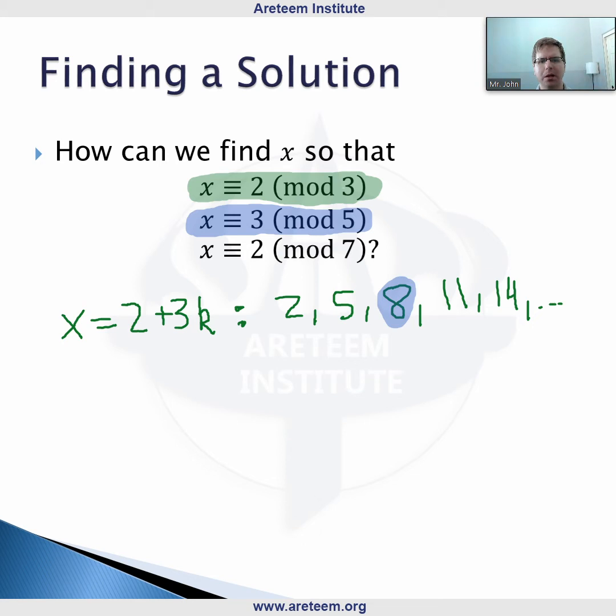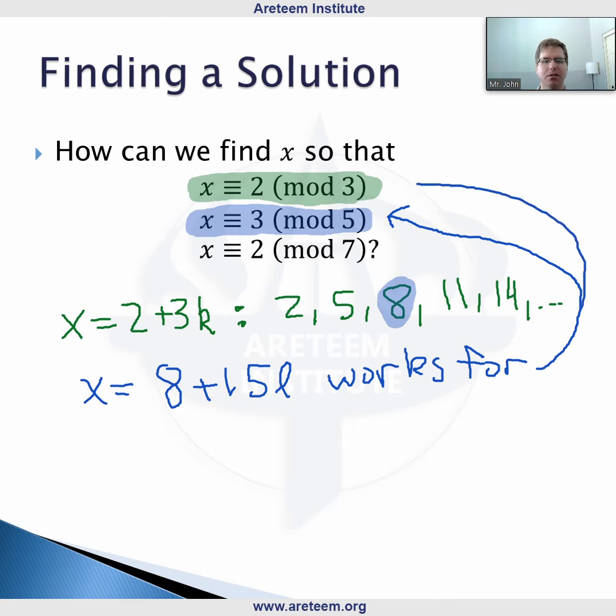Do any of these numbers have a remainder of 3 when we divide by 5? That means the unit's digit has to be 3 or 8. We have an 8 here, so 8 satisfies the first two equations. This would be unique mod 3 times 5, which is 15.